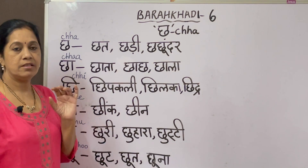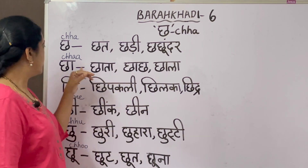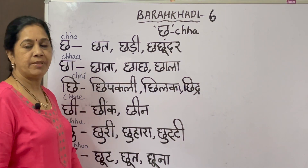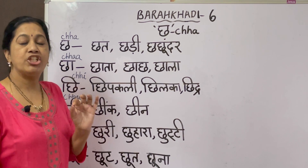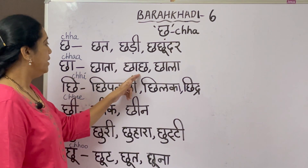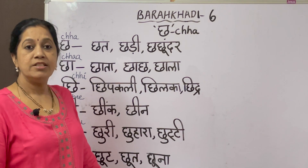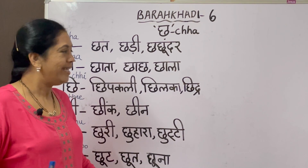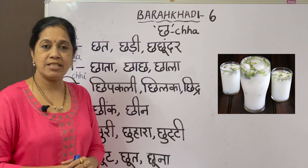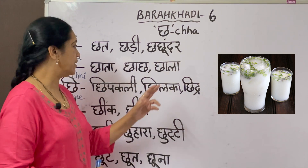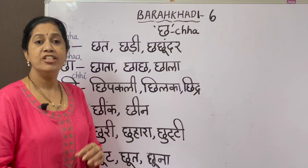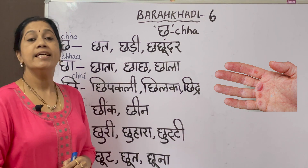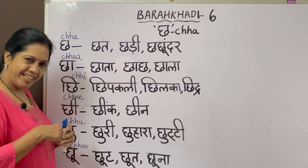The next letter is 'chha' - double A, C-H-H-A-A. The first word is 'chata' - chata means umbrella. The next one is 'chhat' - chhat is buttermilk, very famous in Punjab. The next one is 'chala' - chala means blister, you get blisters on your skin.